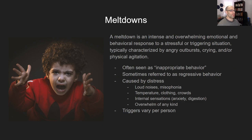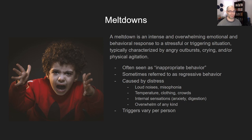Meltdowns: a meltdown is an intense and overwhelming emotional and behavioral response to a stressful or triggering situation, typically characterized by angry outbursts, crying, and/or physical agitation. A meltdown is often labeled as 'inappropriate behavior' — this is why things like ABA have come up, and one reason for bullying and rejection in neurotypical society. It's also sometimes referred to as regressive behavior. Basically, you're overwhelmed. Hyper-arousal is when you're overstimulated for too long, and then you enter into a state of distress or dysregulation.